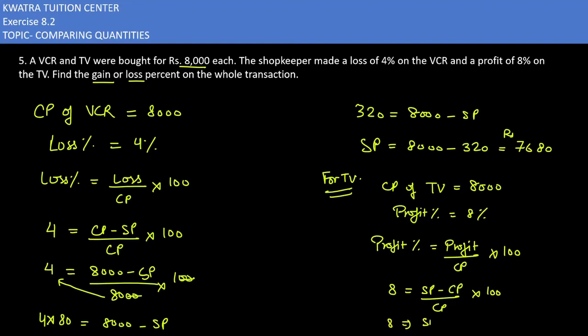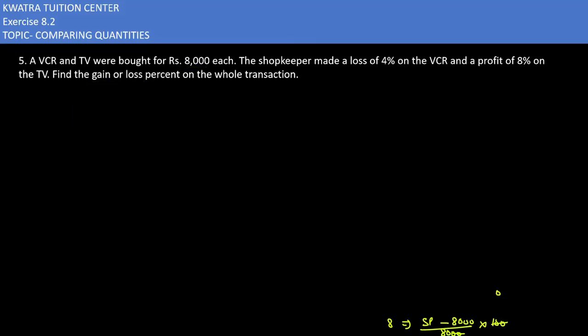SP value is how much? We don't know. CP value we know is 8,000, and CP value in denominator is 8,000. Two zeros to two zeros cancel, and 8 into 80 multiply.